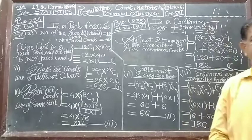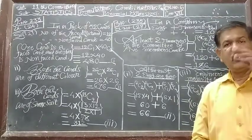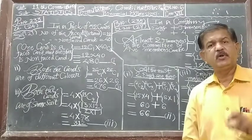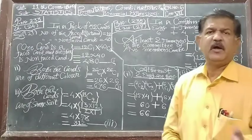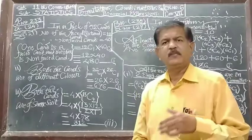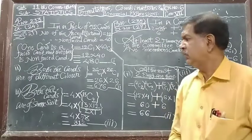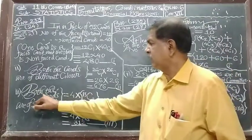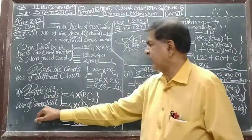Next, final event, third event: that both the cards are of the same suit. Both the cards are of the diamond, or of the club, or of the spade, or of the heart. Means both the cards are of the same suit.